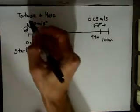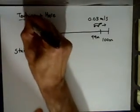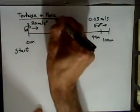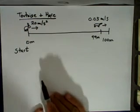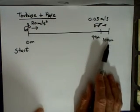So for this, I've come up with a little example, the famous example of the tortoise and the hare. And we're going to see who's going to win this race. So it's a hundred meter race.